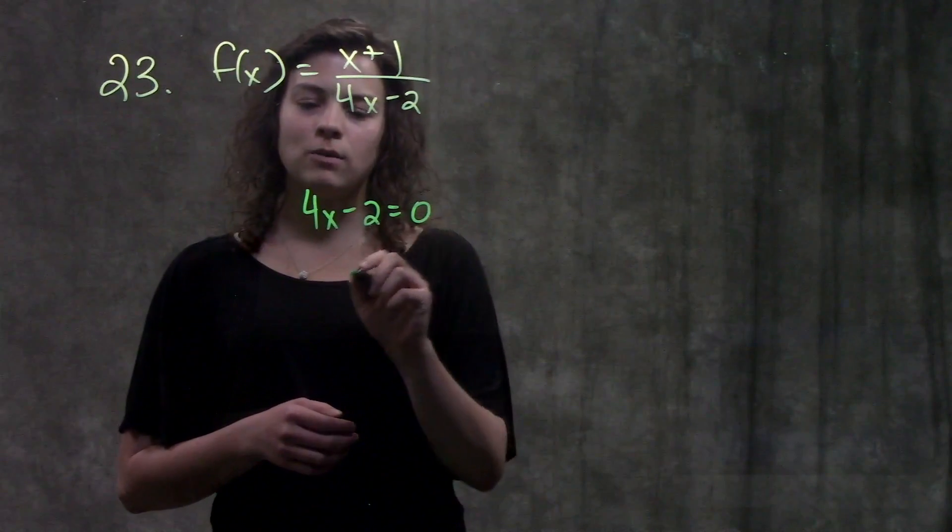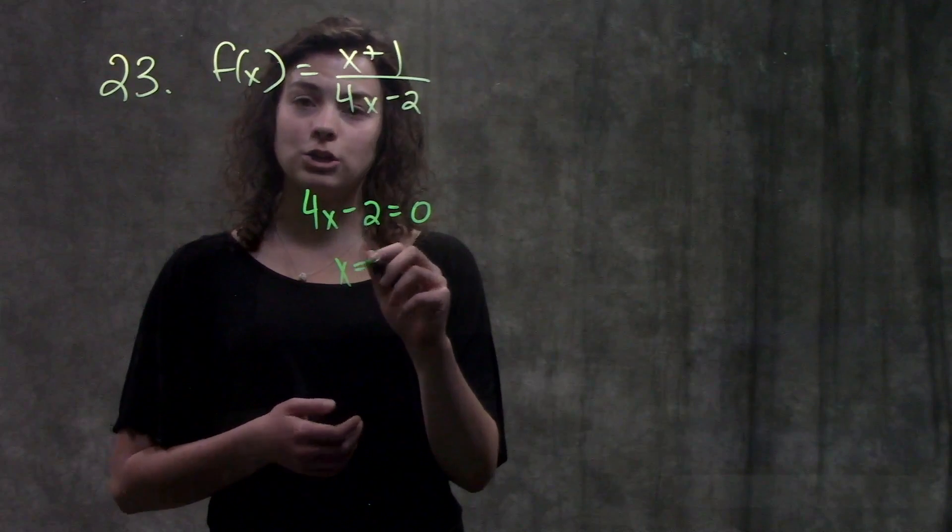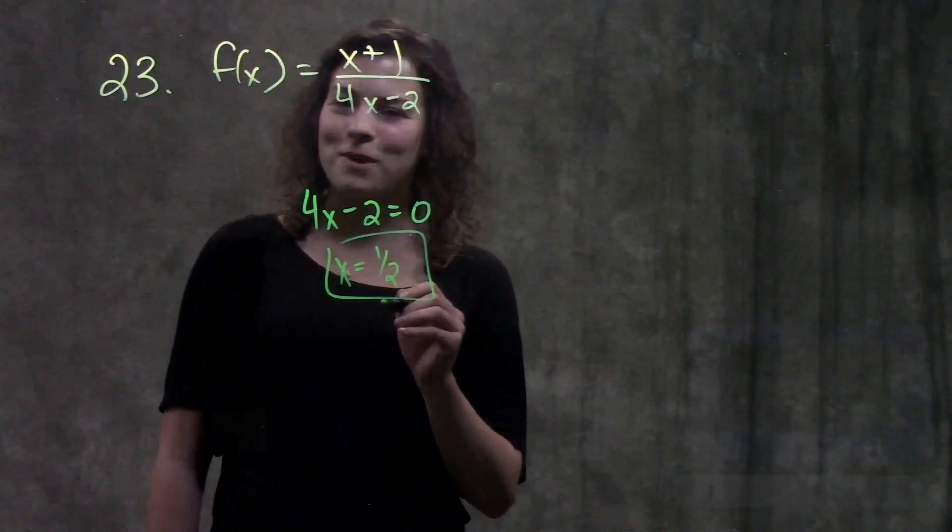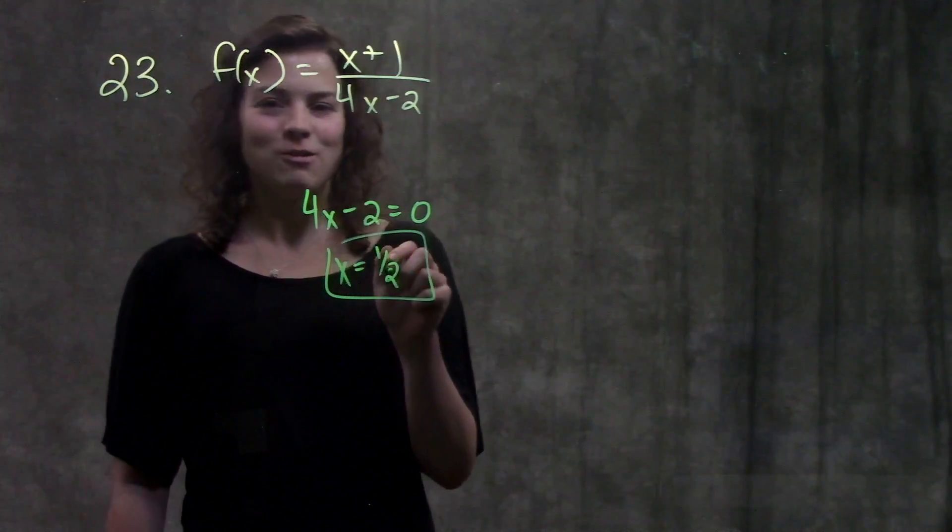When we set 4x minus 2 equal to zero and solve for x, you get 2 over 4, or 1 half. And that's it. Our point of discontinuity is x equals 1 half.